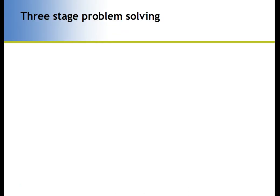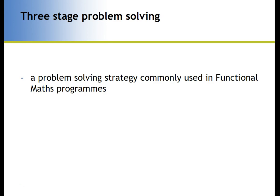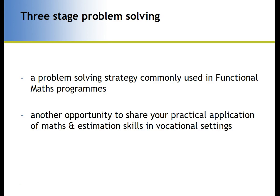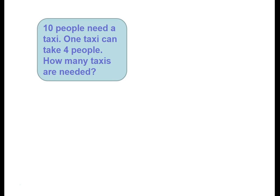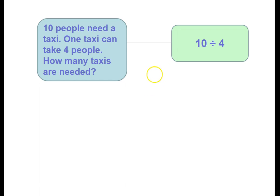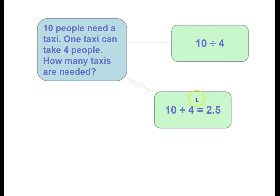The last strategy I wanted to look at is three-stage problem solving, which is commonly used in functional maths programmes and is another opportunity to share your practical application of maths skills within a practical context. Here's a simple example: ten people need a taxi; one taxi can take four people — how many taxis are needed? This simplistic example helps clarify the three stages. First, we decide what we're going to do — divide ten by four or count on in fours. Then we actually do the number crunching.